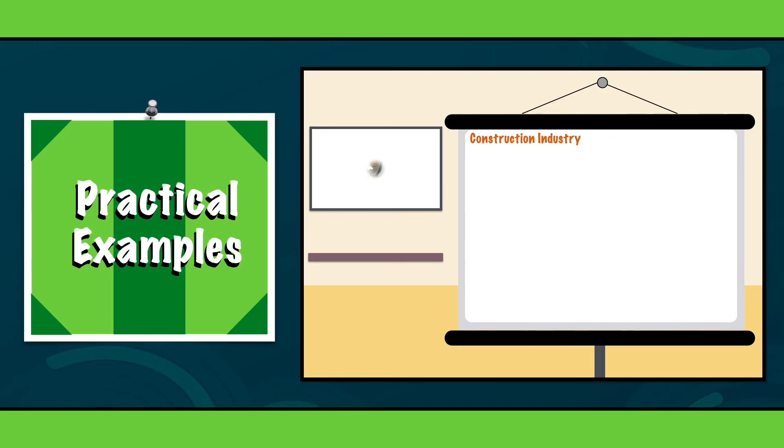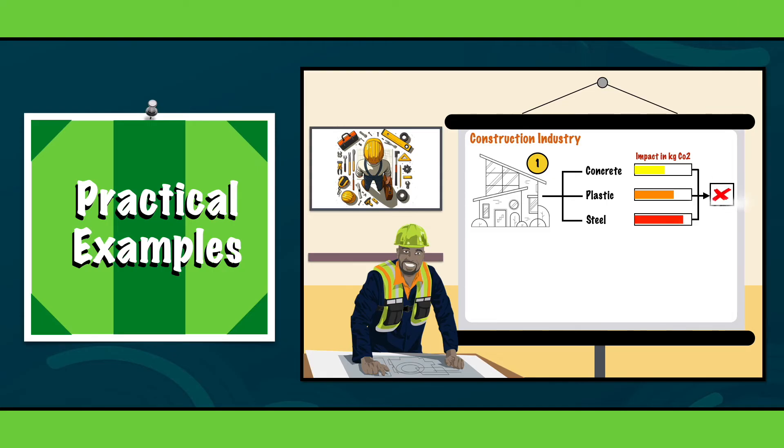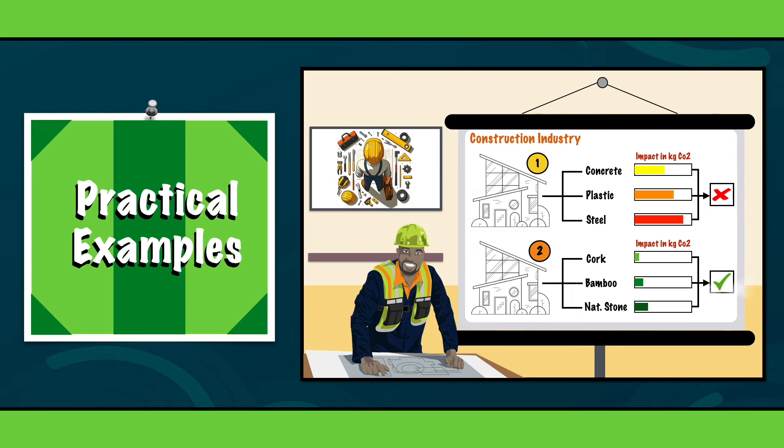The construction industry. Second, we will take a look at the construction industry, where a company used an SLCA to evaluate the environmental impact of the materials that are planned for a new building project. The assessment revealed that some of the materials were quite harmful, prompting the company to replace them with more sustainable alternatives, like cork insulation, bamboo, and natural stone. This shift not only reduced the project's environmental impact, but also improved its chances of earning a green building certificate.